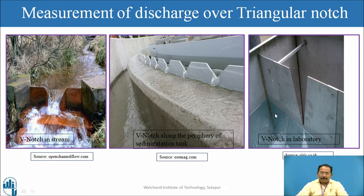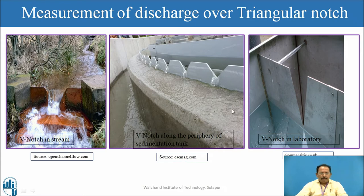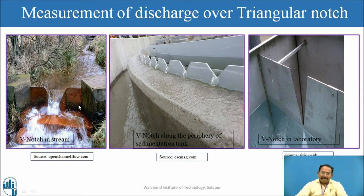The third picture shows a thin metallic plate — a triangular notch located in a laboratory channel to find out the discharge or rate of flow. So these are the three conditions shown, but in many streams you can locate this triangular notch and find the discharge.